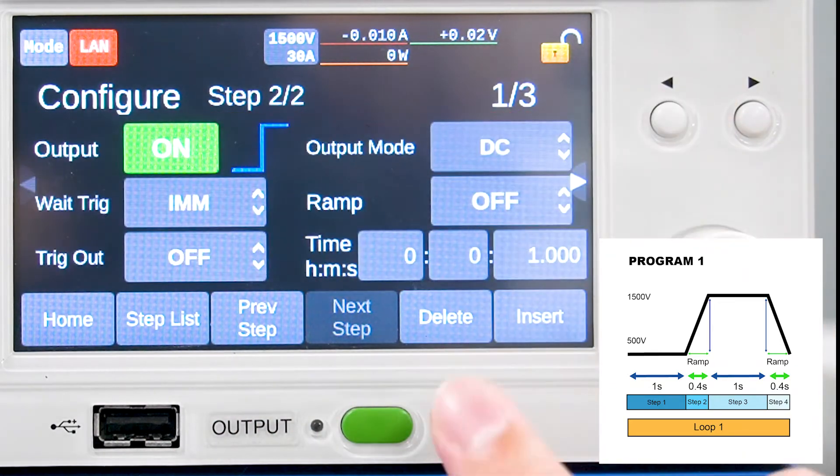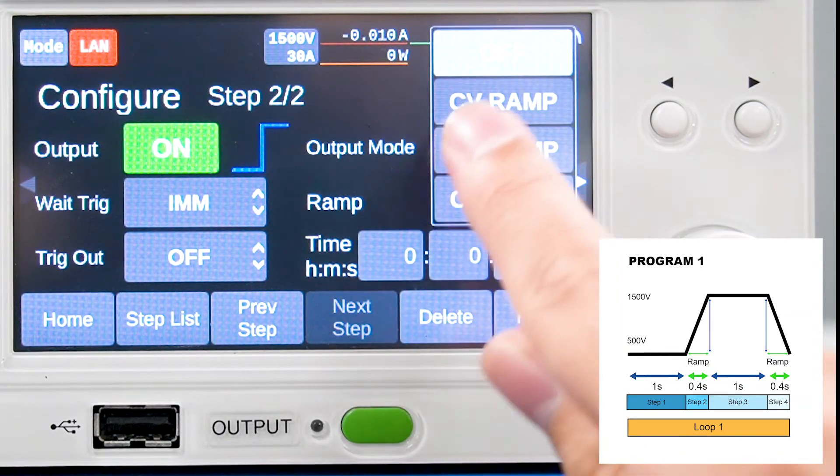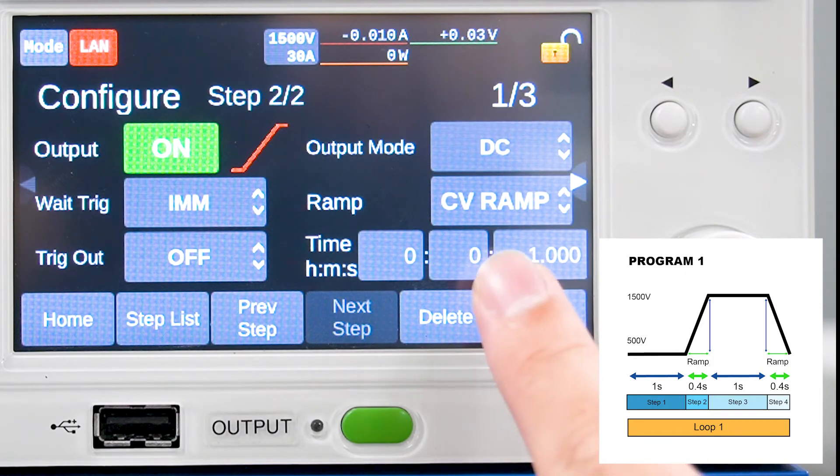Now, let's set the ramp. Choose CV ramp. Change the time to 0.4 seconds.